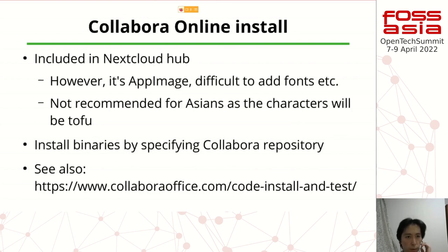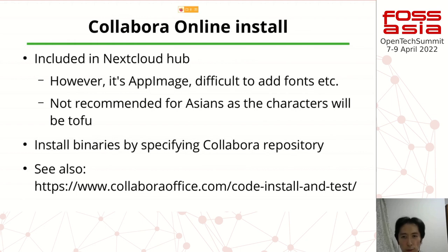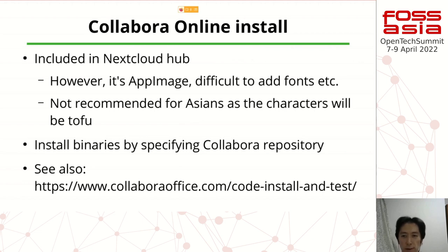For Collabora Online installation: it's included in Nextcloud Hub, but that's an upstream image version, and it's difficult to add fonts — Japanese or Asian fonts are not included. I do not recommend that for Asian people. I recommend the binary from the Collabora repository — the .deb package or .rpm package — and you can check the full Collabora site.